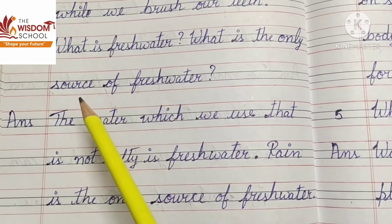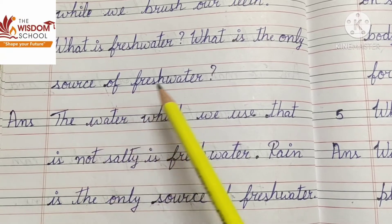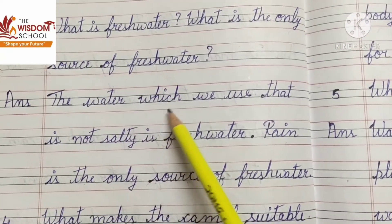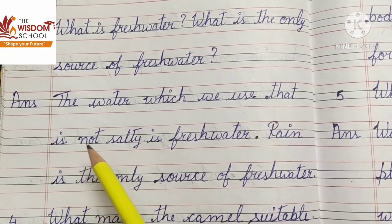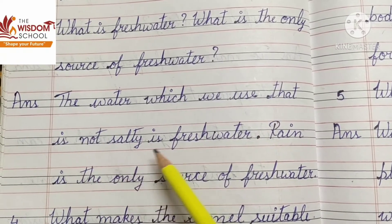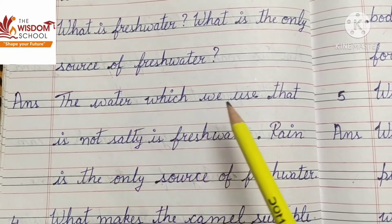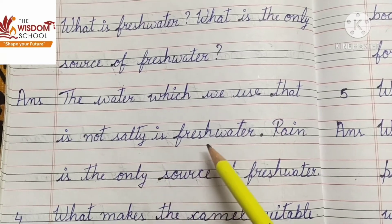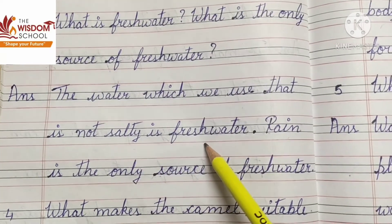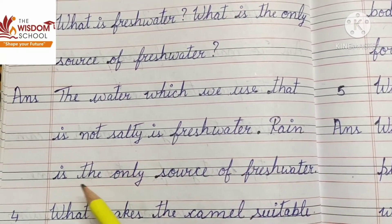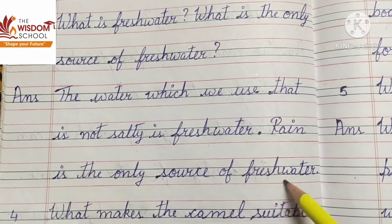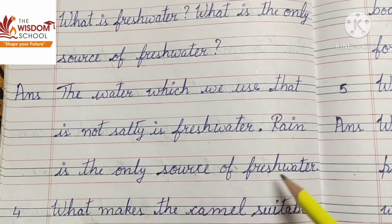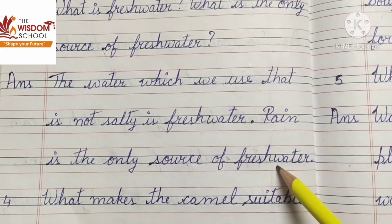Third one: what is fresh water, and what is the only source of fresh water? Fresh water kya hota hai — the water which we use that is not salty is fresh water. Rain is the only source of fresh water — jo rain hai, woh only source hota hai fresh water ka.